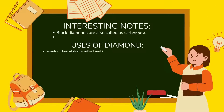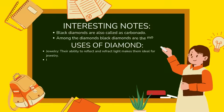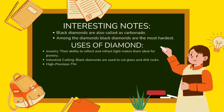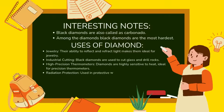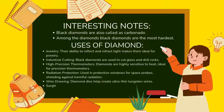Uses of diamond: their ability to reflect and refract light makes them ideal for jewelry. Black diamonds are used to cut glass and drill rocks (industrial cutting). Diamonds are highly sensitive to heat, making them ideal for high-precision thermometers. They are used in protective windows for space probes, shielding against harmful radiation. Diamond dies help create ultra-thin tungsten wires (wire drawing). Surgeons also use diamond knives for delicate operations.